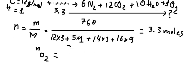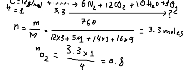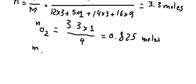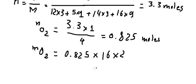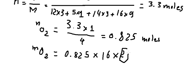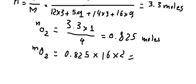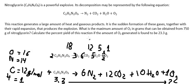The moles of oxygen is 3.3 multiplied by 1, divided by 4, which gives 0.825 moles. We can then find the mass of oxygen. The molar mass of oxygen is 16 multiplied by 2 (since we have O₂), which is 32. The mass of oxygen is 0.825 multiplied by 32, giving 26.4 grams.